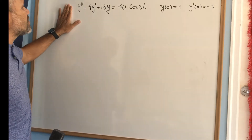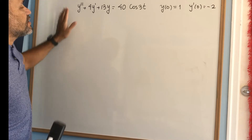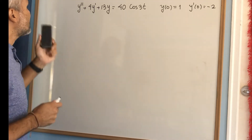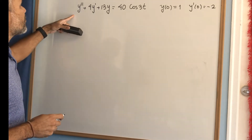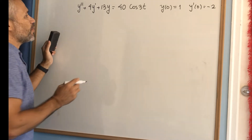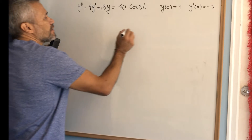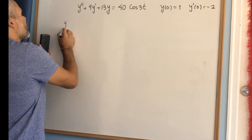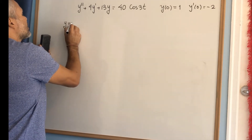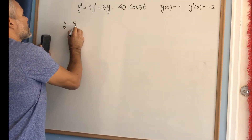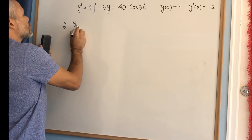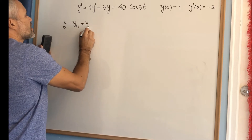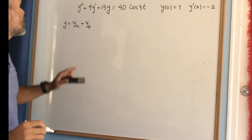In this video, we will solve this initial value problem. Since it is a second-order linear equation, the solution is going to be given by y equals the general solution of the homogeneous plus the particular solution.